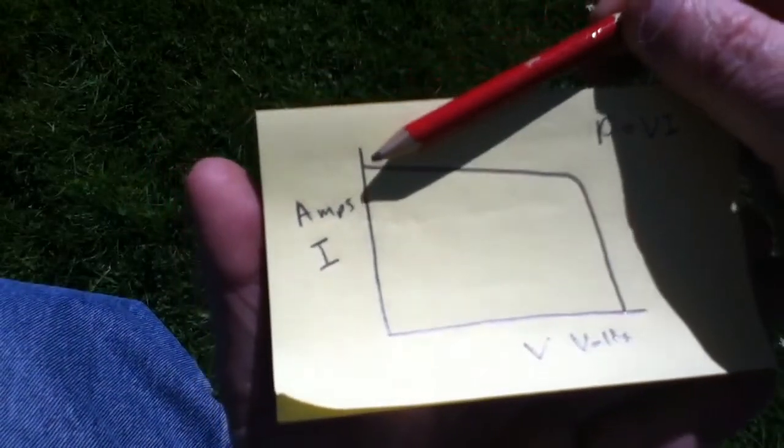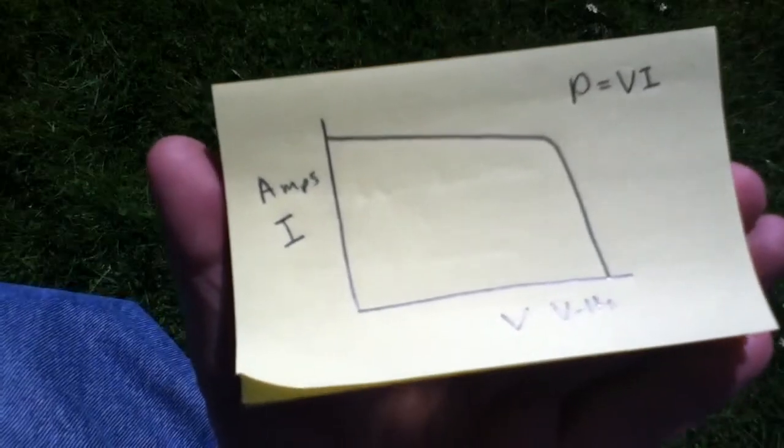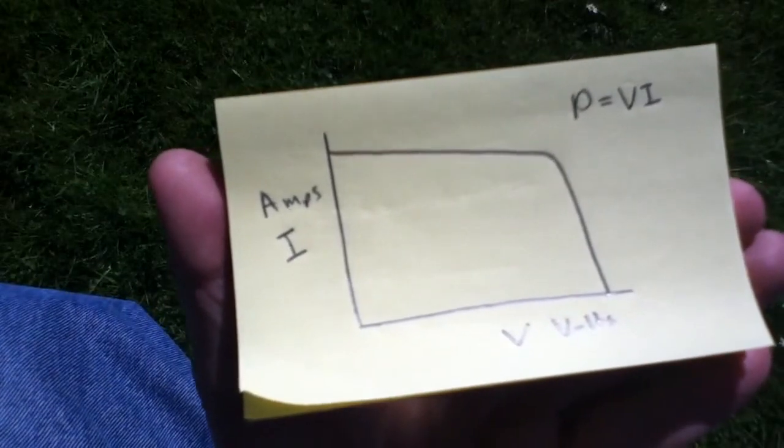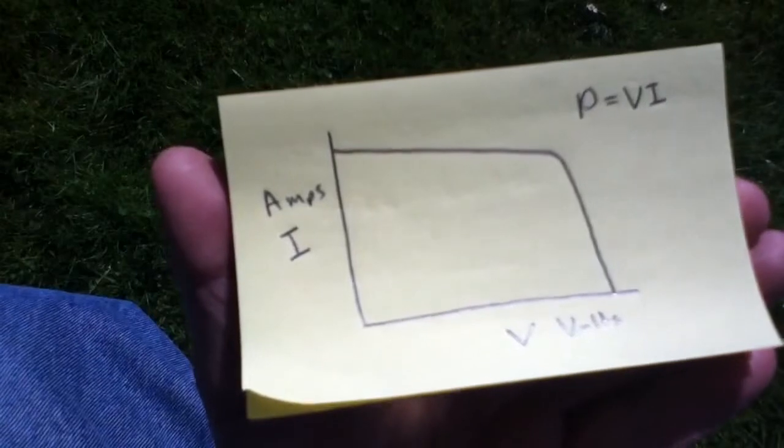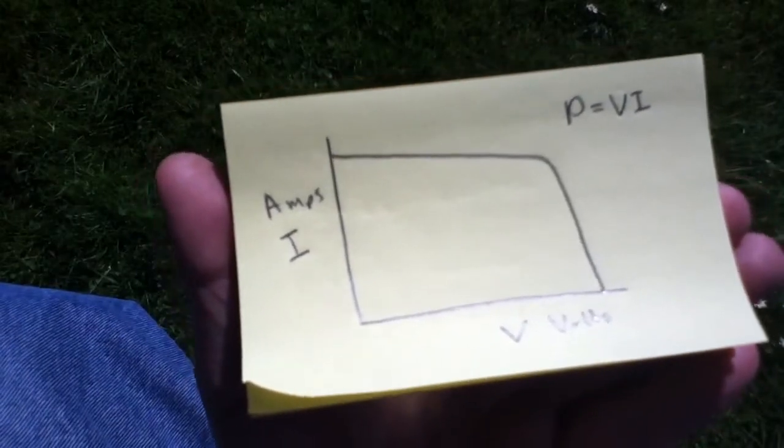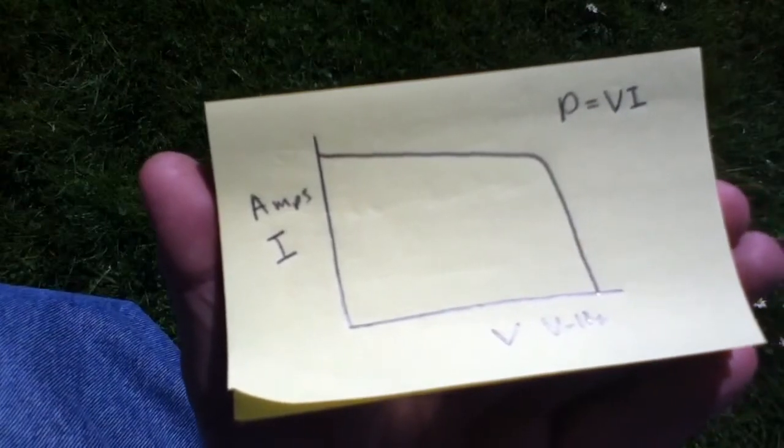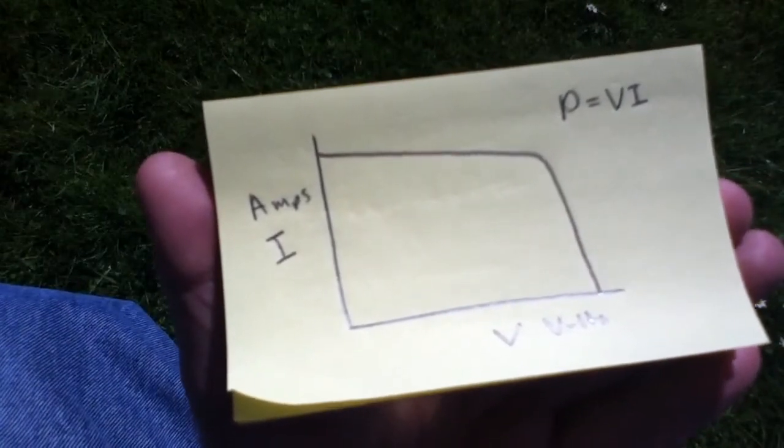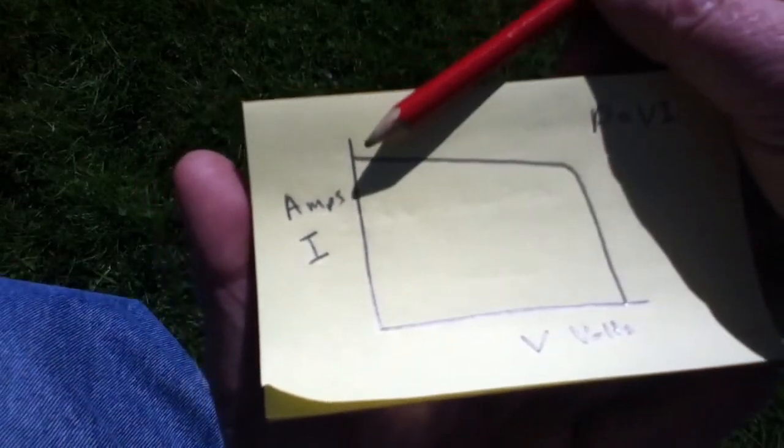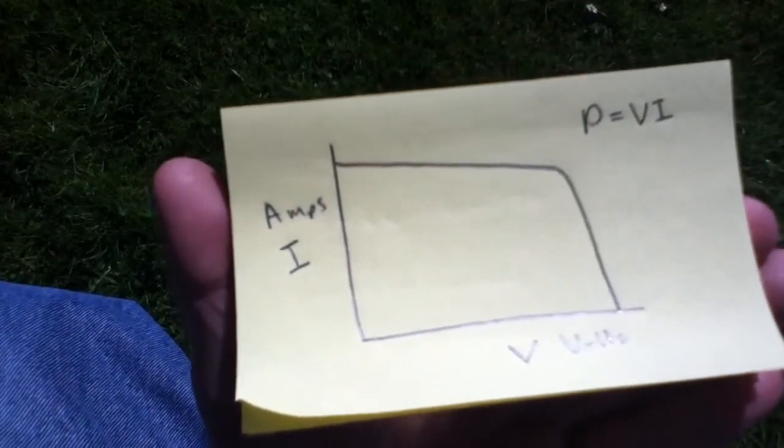And similarly, up here, we've got the maximum number of amps that the solar panel can ever generate, but no volts. And that's when you short circuit the solar panel. So, if you put a dead short across the output terminals, you're going to get the maximum current flowing, but no volts.